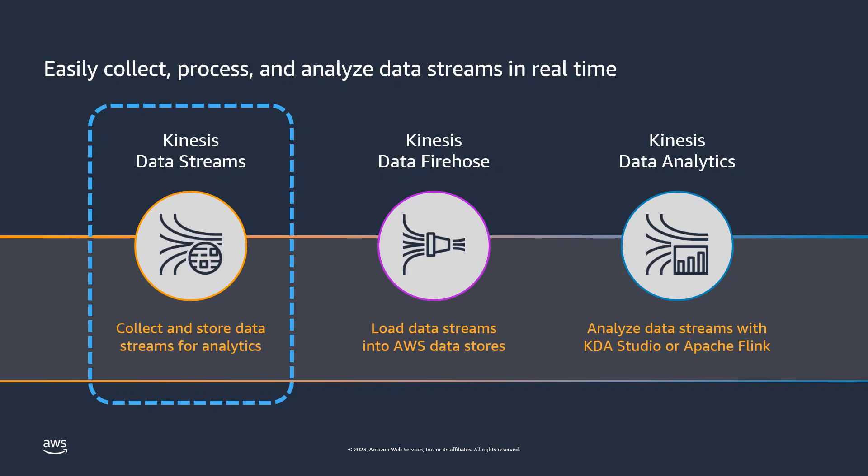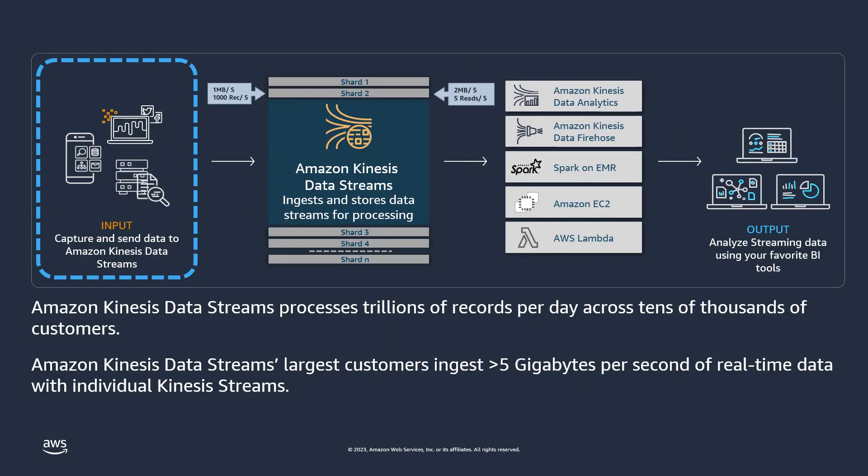Afterwards, data consumers, such as Kinesis Data Firehose and Kinesis Data Analytics, can retrieve and process the data records as needed. Amazon Kinesis Data Streams processes trillions of records per day across tens of thousands of customers. The largest customers ingest more than 5 gigabytes per second of real-time data with individual Kinesis Streams.